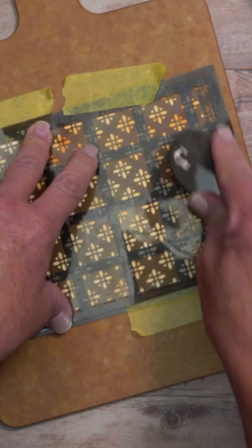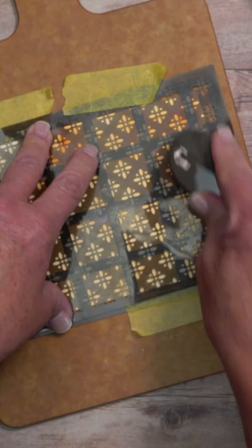Line up your stencil where you want it, tack it down with some low tack tape to help keep it from moving, and then apply the second layer of coverage.